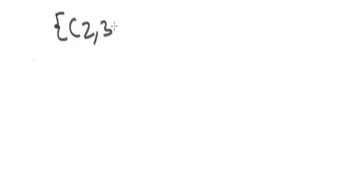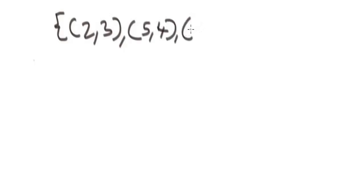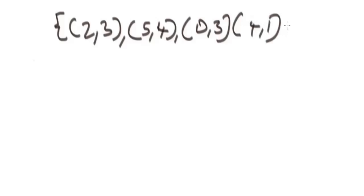Let's say we are given these ordered pairs: (2, 3), (5, 4), (0, 3), and (4, 1). We have to find the domain of these ordered pairs.